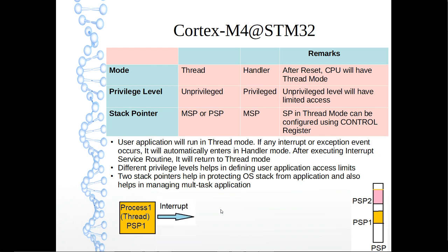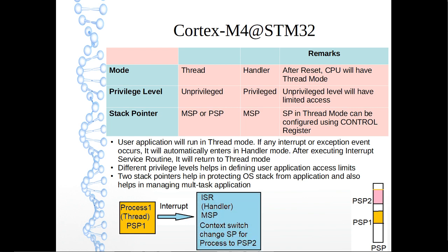If an interrupt occurs — for example, a kernel scheduler interrupt — it will automatically switch to handler mode, and the interrupt subroutine will use the MSP main stack pointer because in handler mode the stack pointer is always the main stack pointer. Within the interrupt service routine, instructions can change SP to PSP two, setting the PSP register to PSP two for process two, enabling context switching from process one to process two.